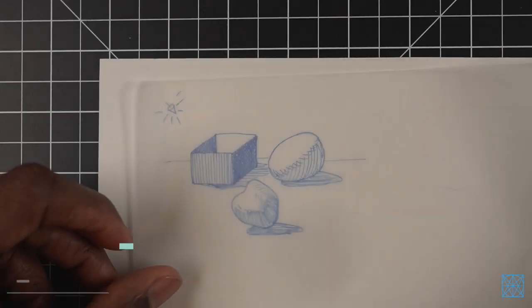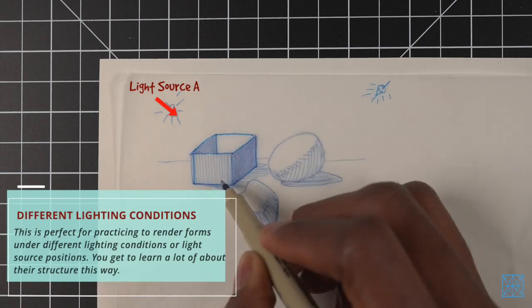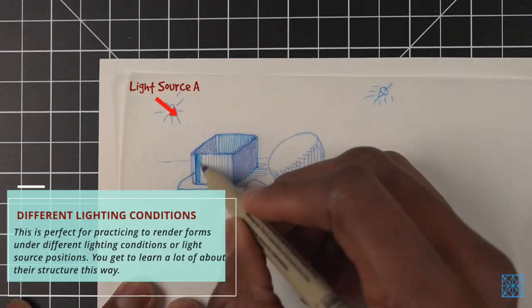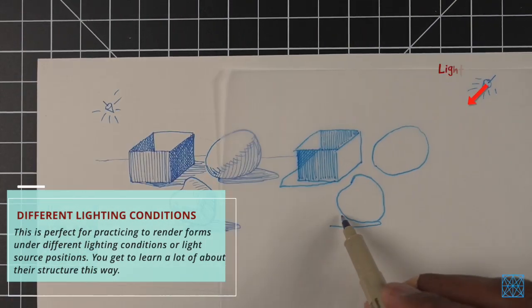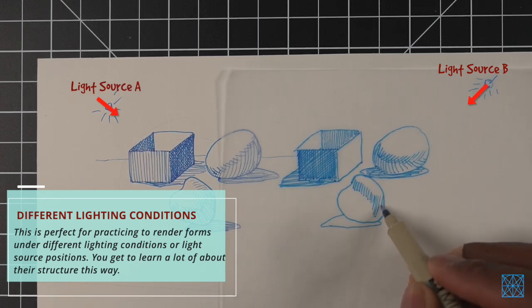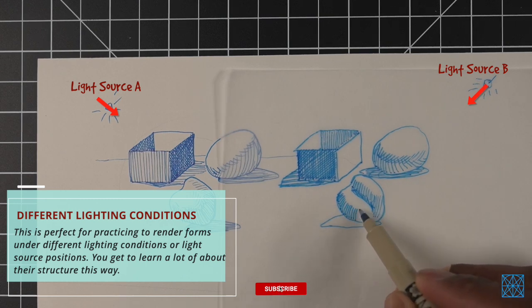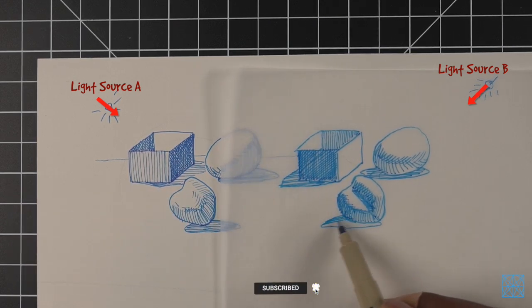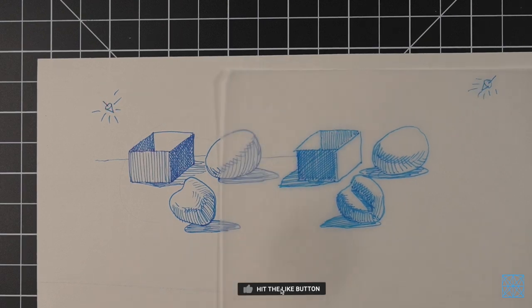With practicing shading, I sometimes make one line drawing and create several copies, then shade each one with a different type of light. Now this not only helps improve my understanding of light and shadow and shading, but also helps me to better understand the structure of forms because different light source positions reveal the shape of forms differently.